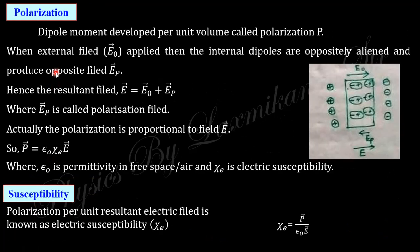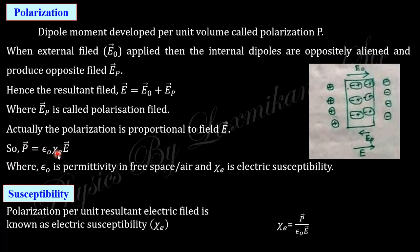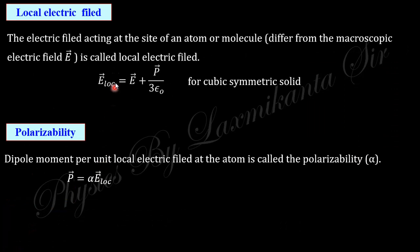Next is polarization. When we apply an external field, dipoles are generated due to charge separation. The dipole moment per unit volume is known as polarization. When we apply external field E₀, the internal dipoles align oppositely and produce an opposing electric field E_P. The resultant electric field E within the material is the sum of these two fields. E_P is the polarization field and it is proportional to the external field — when the field increases, polarization also increases. This ratio is known as the susceptibility.